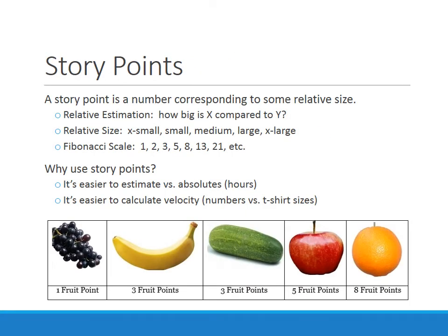To put this into context, we're going to refer back to the digest we did on relative estimation and bring in story points. A story point is just a number that corresponds to some relative size. With relative estimation, you're comparing one thing to another — like how big is this compared to that — and we tend to lay things out in buckets like small, medium, and large. The story point is a number assigned to those relative sizes. A common way to do that is to use the Fibonacci scale, which consists of 1, 2, 3, 5, 8, 13, 21.